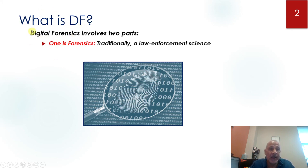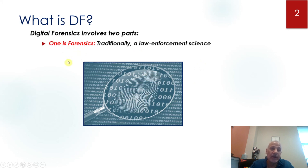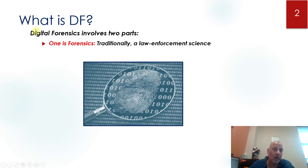Digital forensics has two parts. The first part is forensics, which is a law enforcement science. Before computers became mainstream, forensics involved checking fingerprints, weapons, and other evidence related to a crime. As computers emerged — probably in the 50s and 60s — the digital revolution happened, and things started becoming more digital, which is when we began looking at digital forensics.